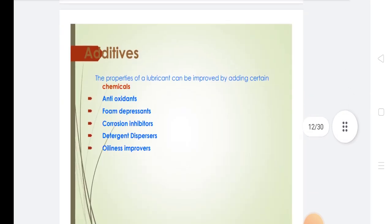The properties of a lubricant can be improved by adding certain chemicals called additives, such as antioxidants, foam depressants, corrosion inhibitors, detergent dispersants, and oiliness improvers.